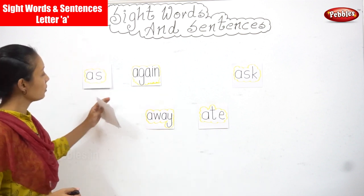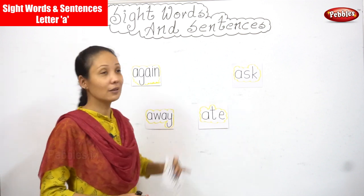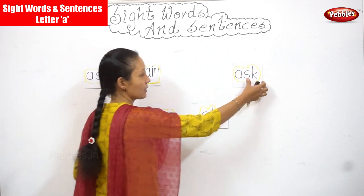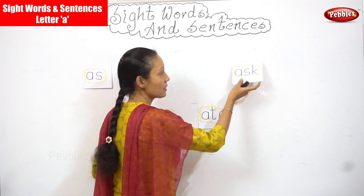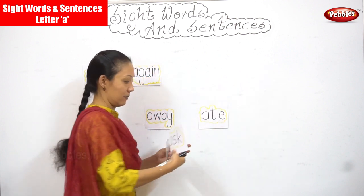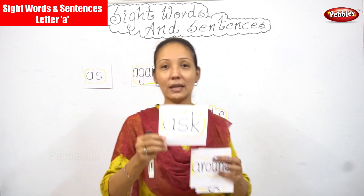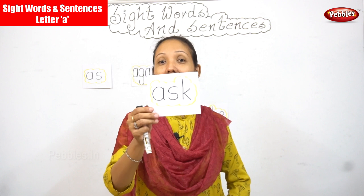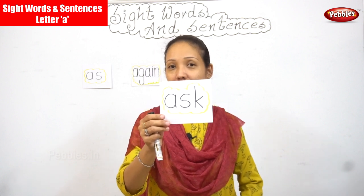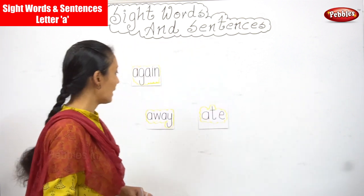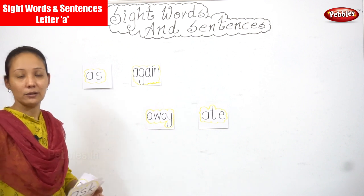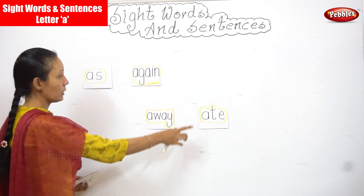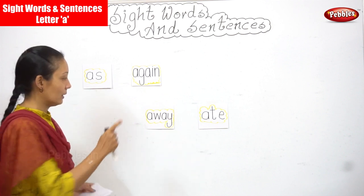Now your next word is 'ask.' I need you to look at every word on the board and find where the word 'ask' is. Yes, you have the word 'ask' over here. What is the word? Ask. Next — 'away.' Where is the word 'away'? Can you see it over here?